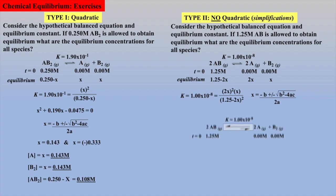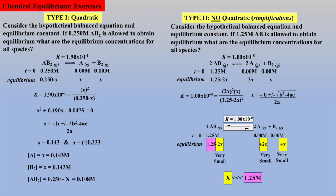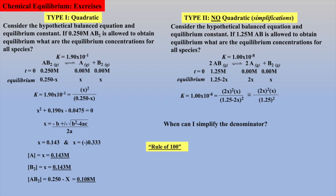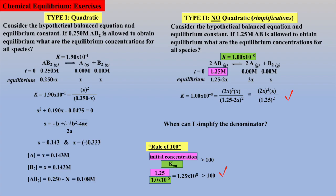First, we need to recognize that AB will dissociate very little due to the small Ka value, and therefore x, which is the change, will be very small compared to the initial concentration of 1.25 molar. Thus, the denominator can be simplified — we can ignore the loss of 2x because we predict it will be negligible — and this affords a much easier calculation. The guideline that allows for employing this simplification is called the rule of 100: if the initial concentration divided by the equilibrium constant is greater than 100, then the denominator can be simplified. In this case, the ratio is much greater than 100, so the simplification is valid.